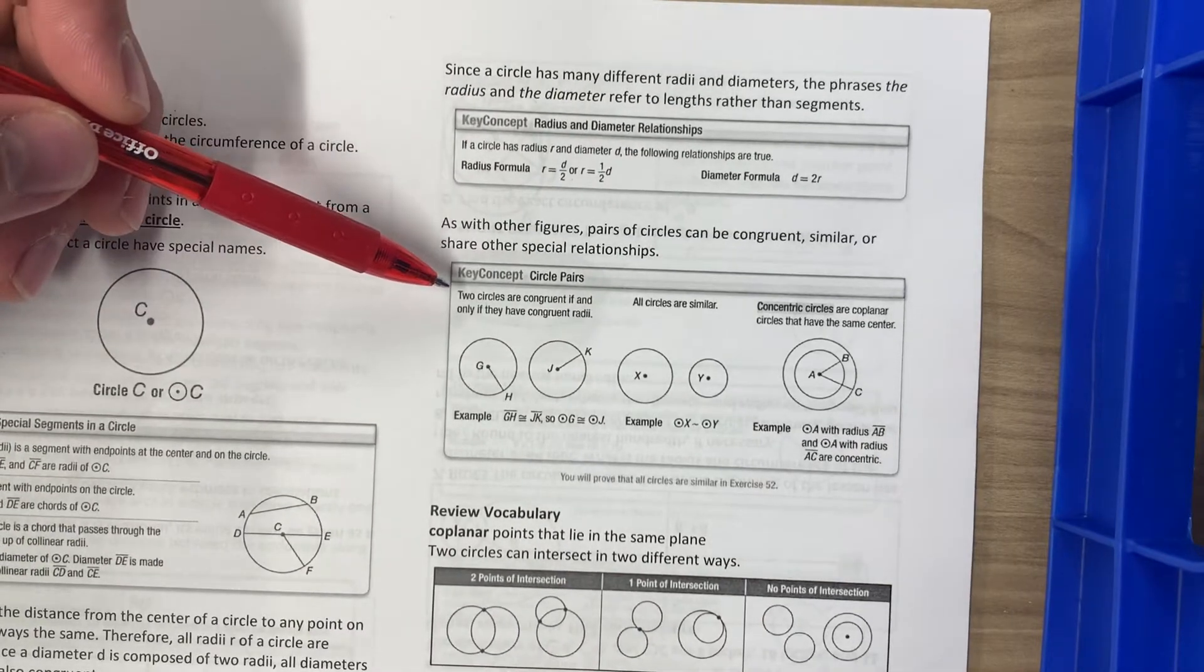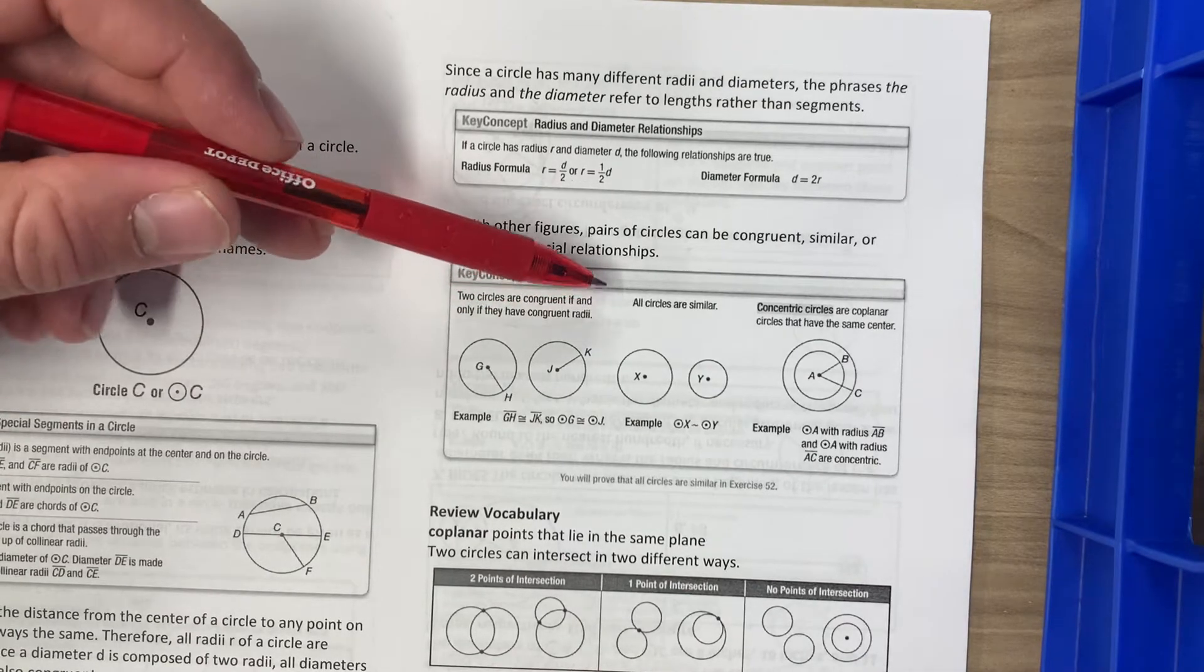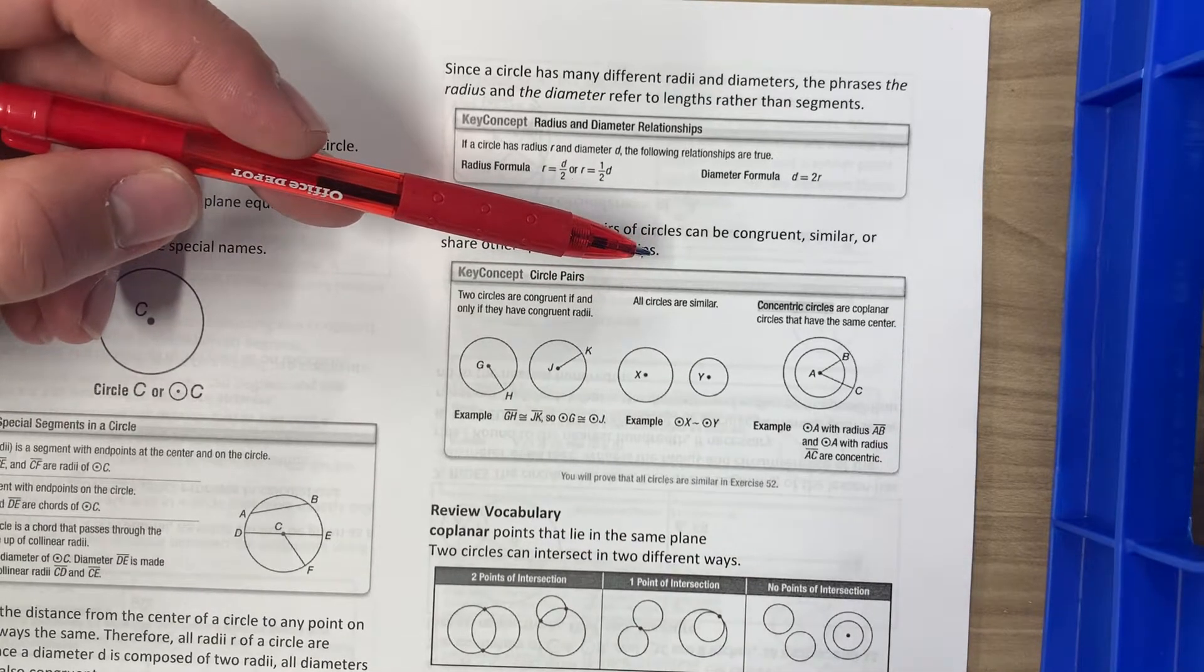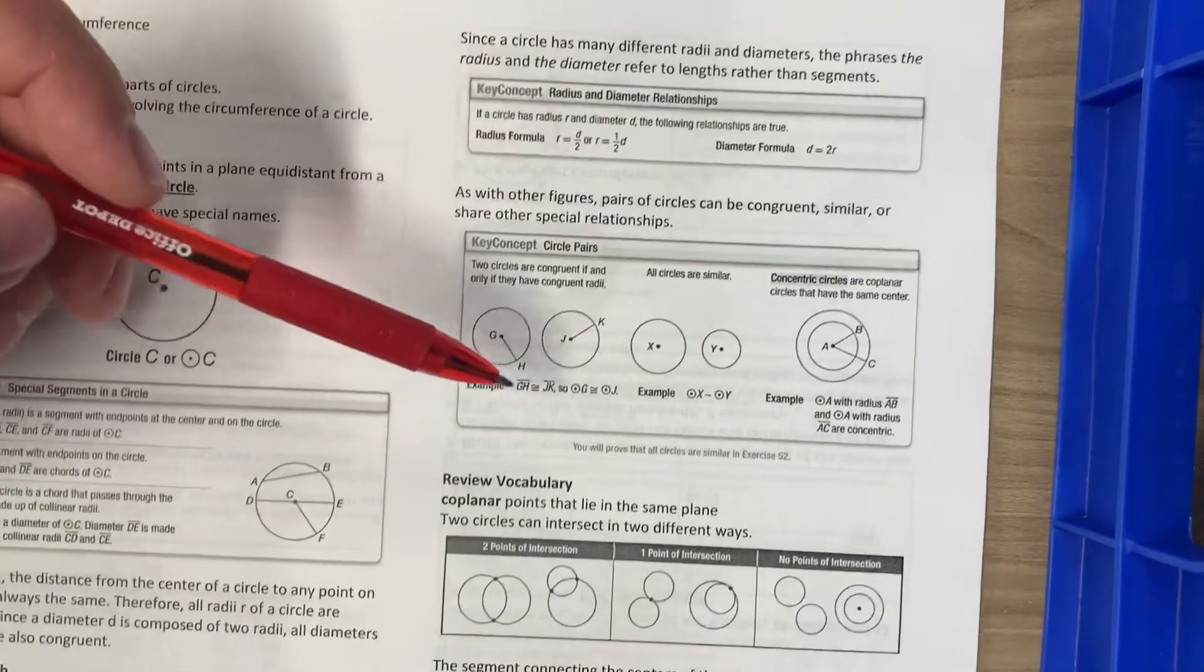Two circles are congruent if and only if they have congruent radii. All circles are similar. Concentric circles are coplanar circles that have the same center. A circle within a circle is what that is.